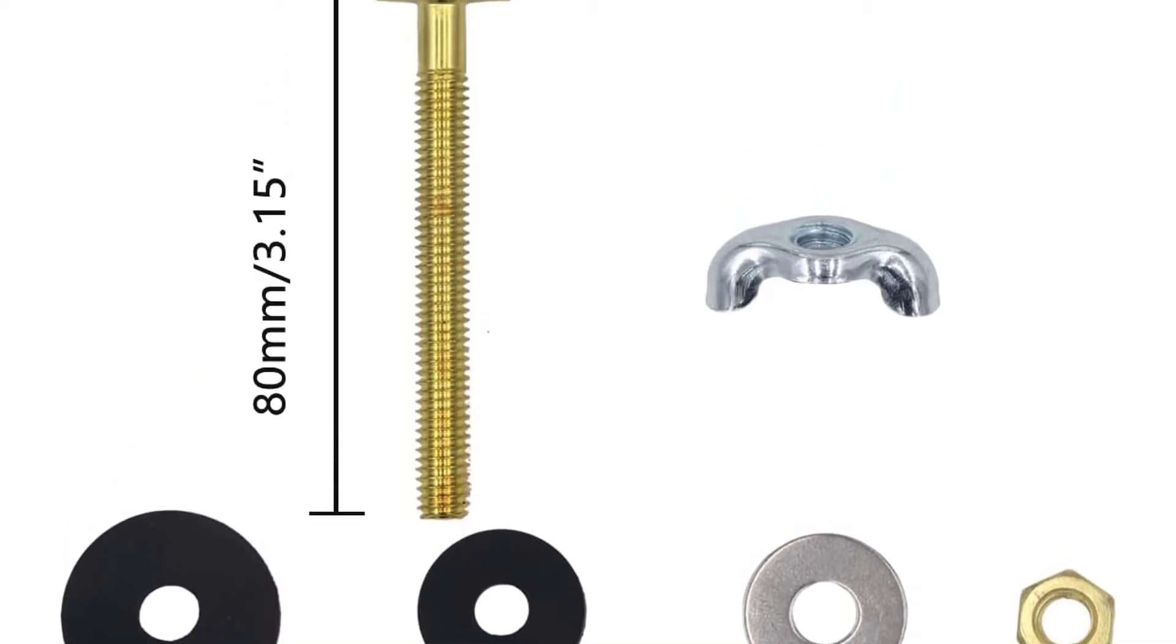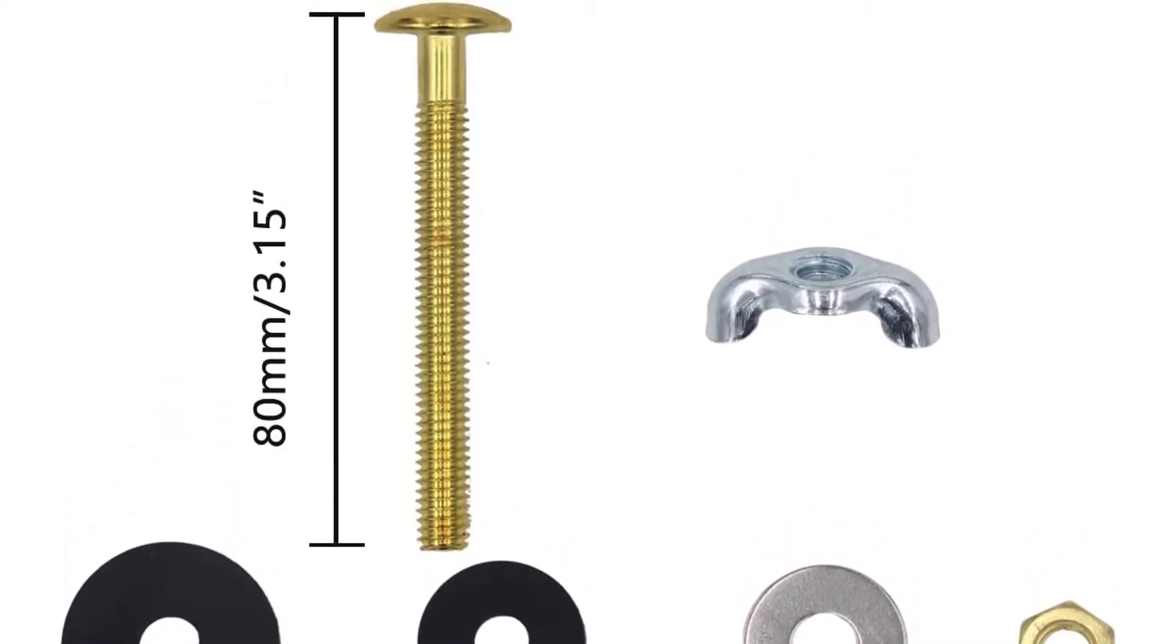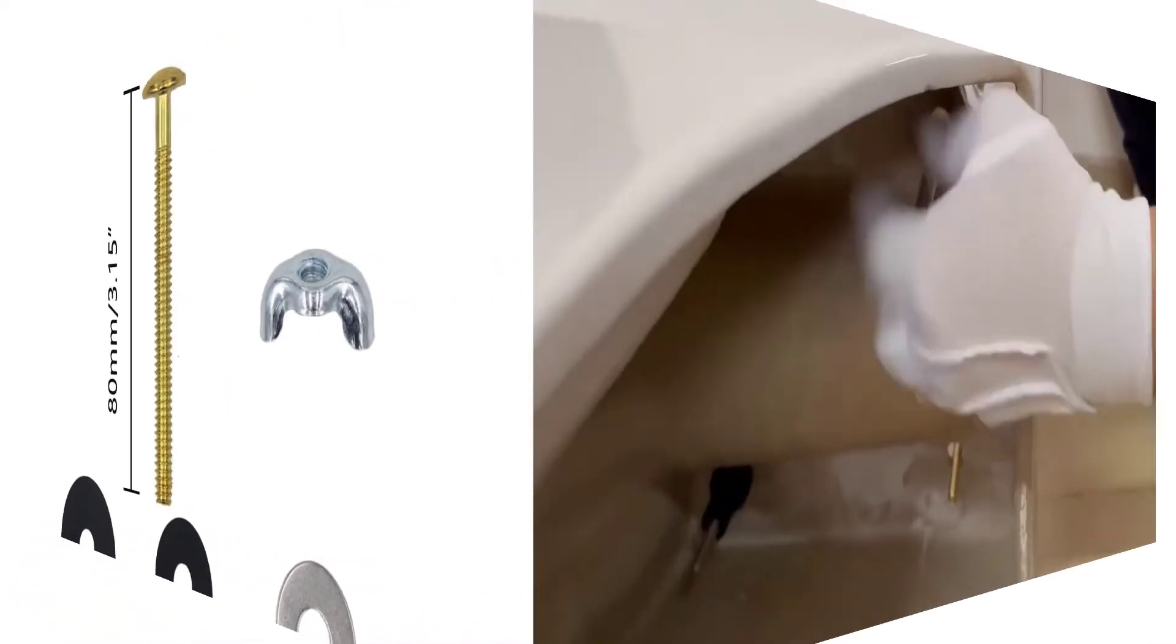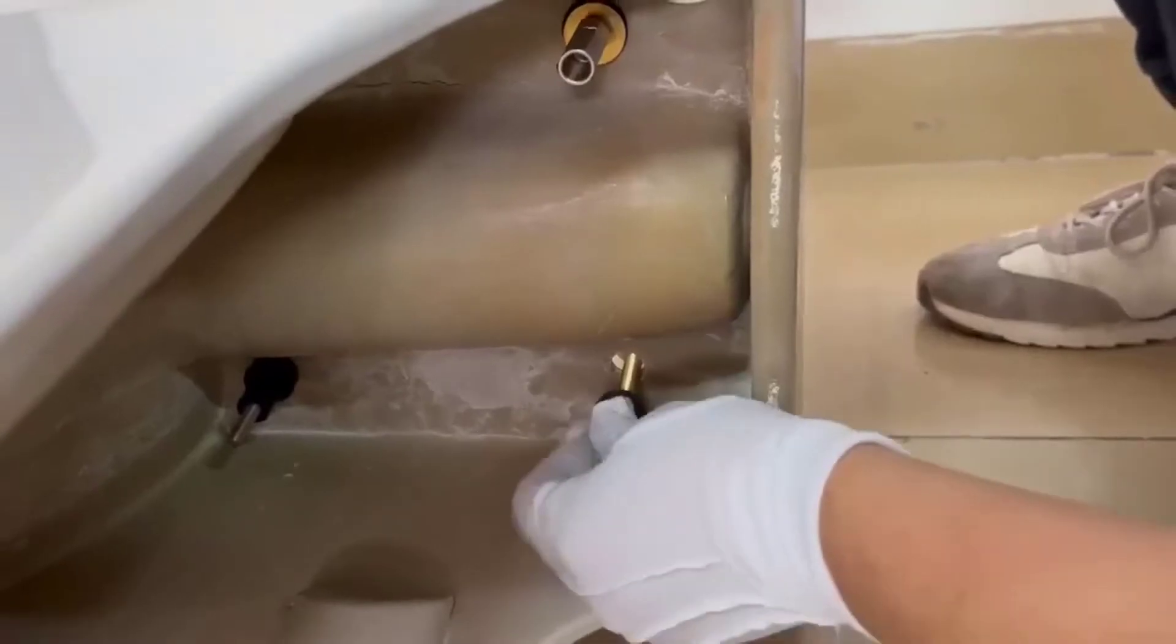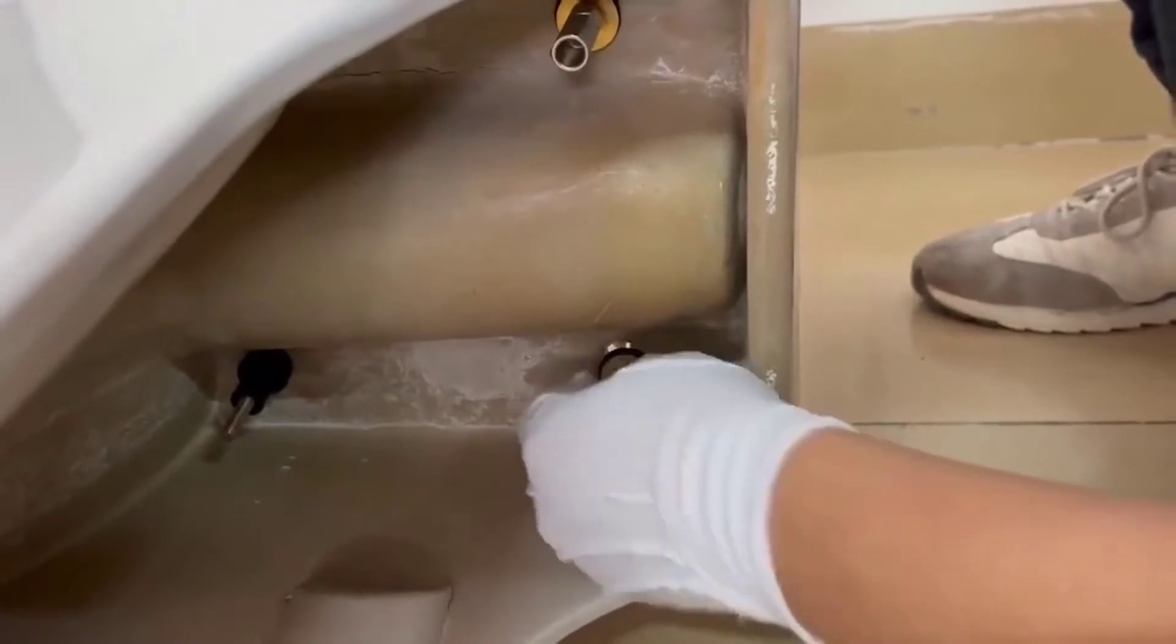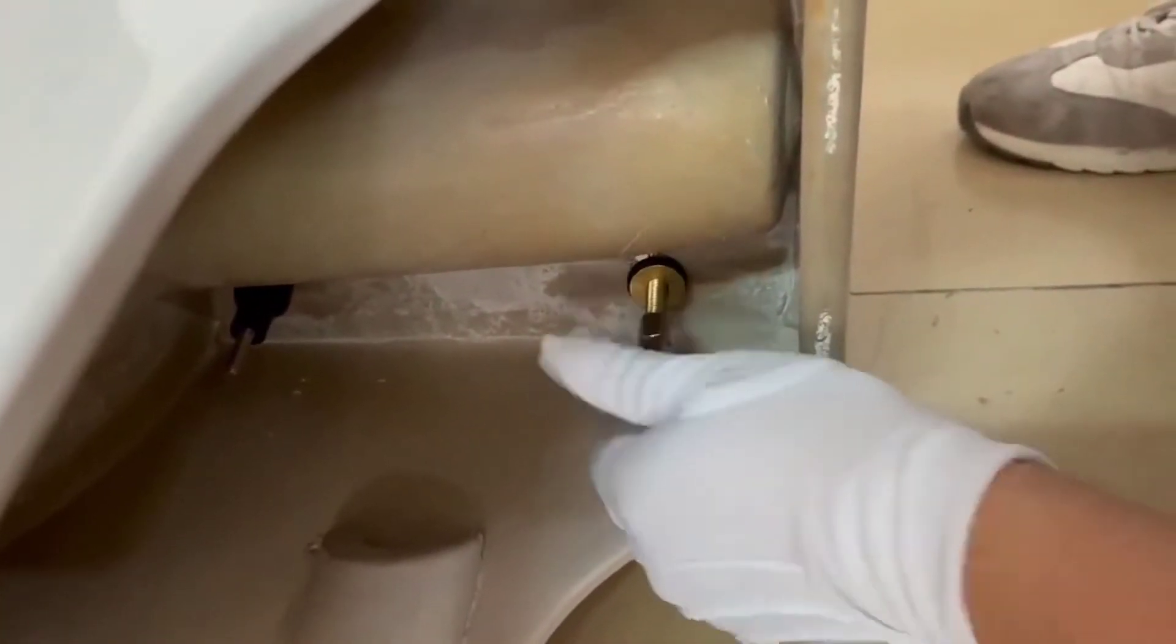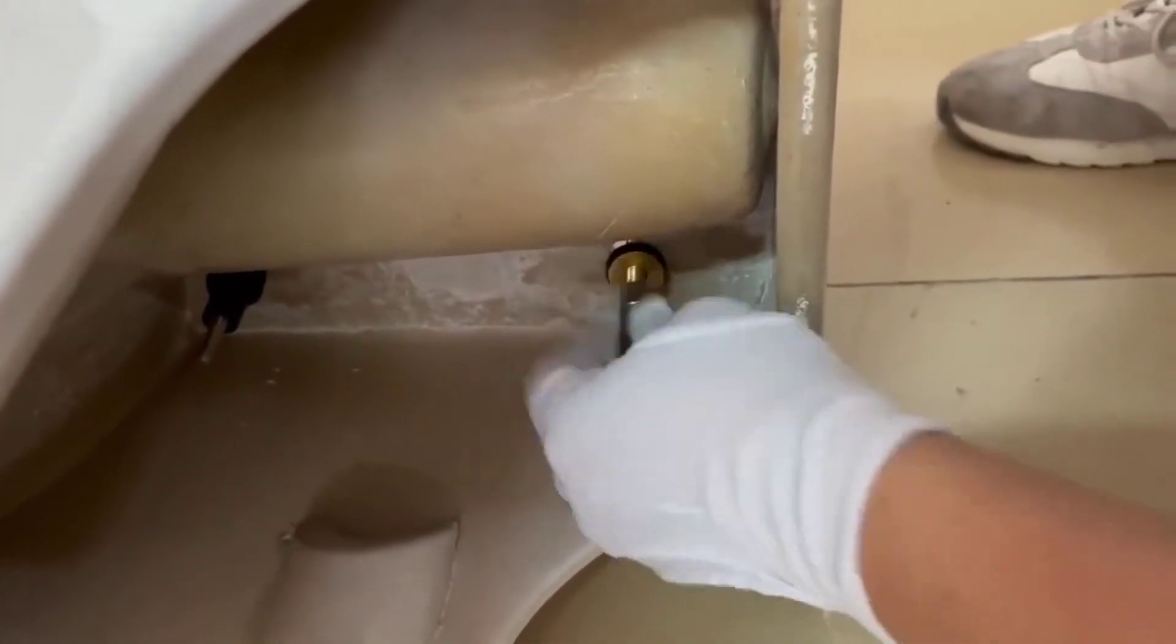In the installation video, you'll see how easy it is to install the special butterfly nut by hand. Tank-to-Bowl Gasket is made of long-lasting sponge rubber material, which is durable. The toilet tank gasket replacement kit adopts a quick installation structure.